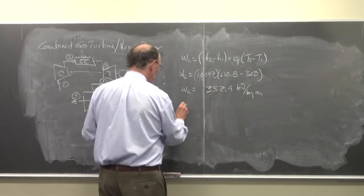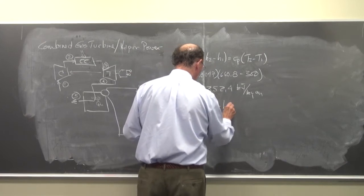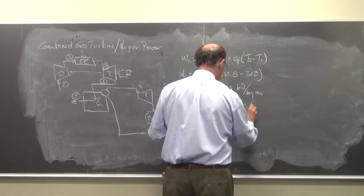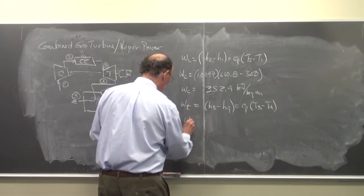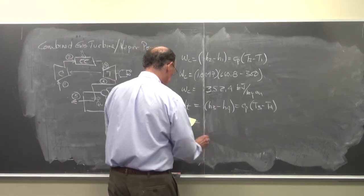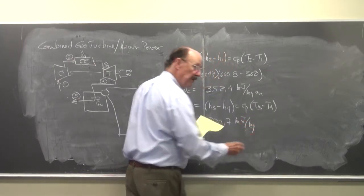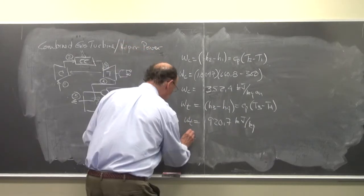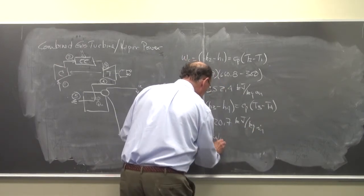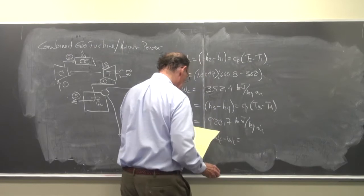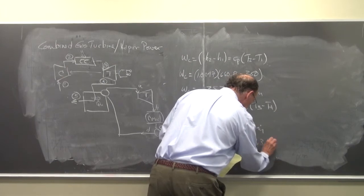Wt is equal to H3 minus H4, which equals Cp times T3 minus T4. So if I substitute in, I have that Wt is calculated, and we get that W net, which is Wt minus Wc, is equal to 568.3 kJ per kg.